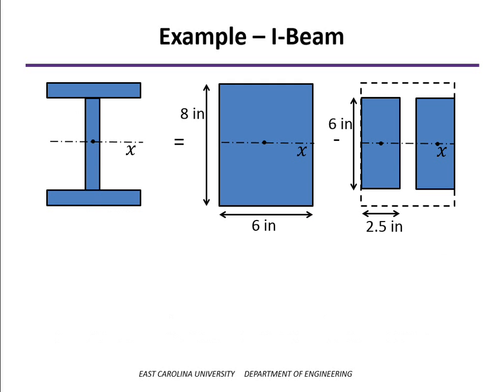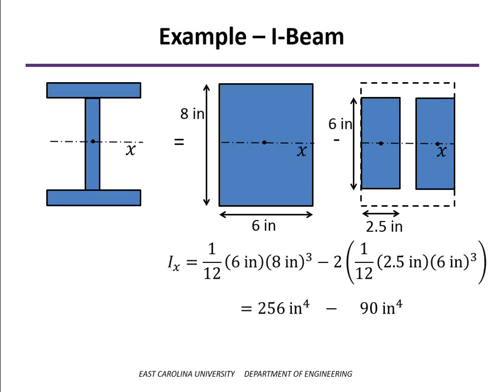Our calculations will go like this. For the solid section, 1/12 bh³, b would be 6 inches and the overall height is 8 inches. For the segments that we're going to remove, being two of them, each of the base is 2.5 inches since the overall base is 6 inches and the web thickness is 1 inch. We can do that calculation and find the moment of inertia is 166 inches to the 4th.